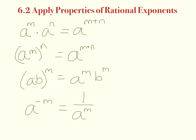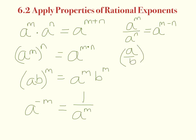If we have a to the m divided by a to the n, as long as the bases are the same, we subtract our exponents: m minus n. If we have a fraction a over b in parentheses to a power, we can apply that power to both the numerator and denominator.